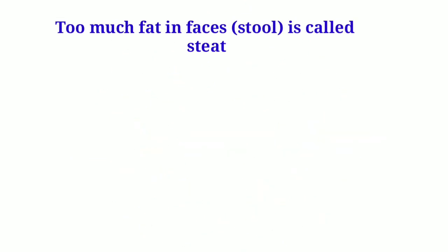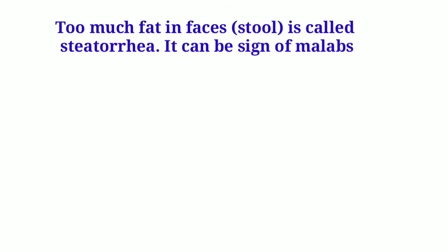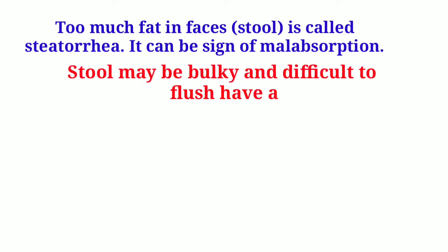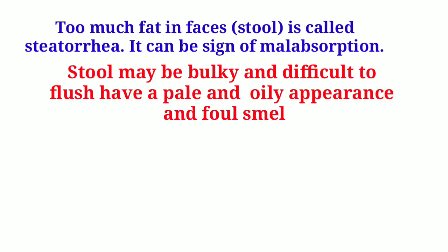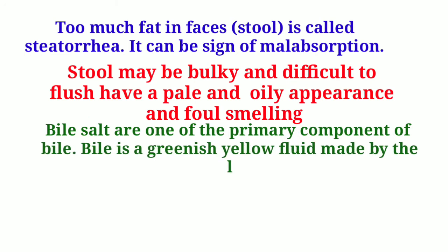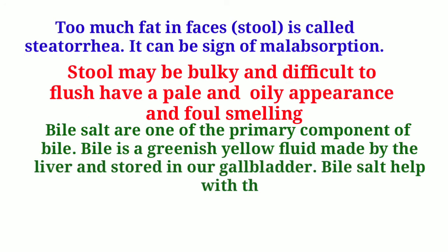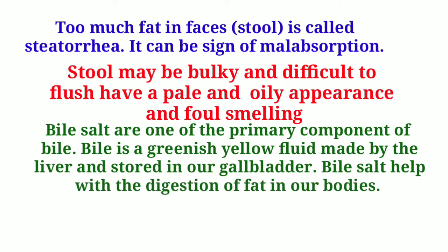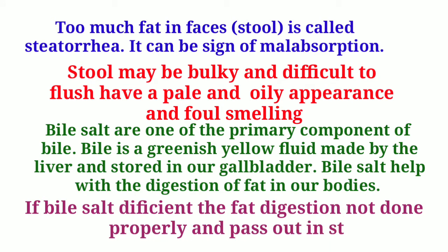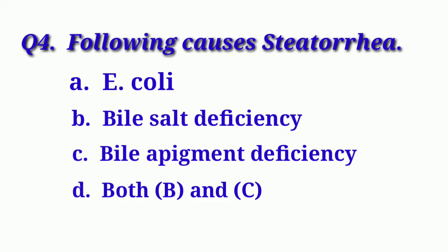We know too much fat in the stool is called steatorrhea. It can be a sign of malabsorption; stool may be bulky and difficult to flush, with a pale and oily appearance and foul-smelling. Bile salts are primary components of bile, a greenish-yellow fluid made by the liver and stored in the gallbladder. Bile salts help with digestion of fat. If bile salts are deficient, fat digestion is not done properly and fat is flushed out in stool. So our correct option is Option B: Bile salt deficiency.